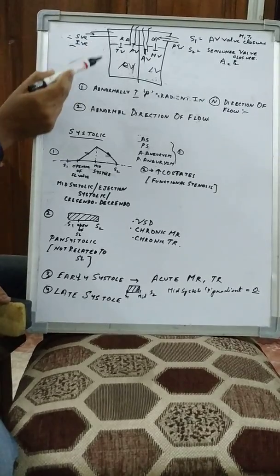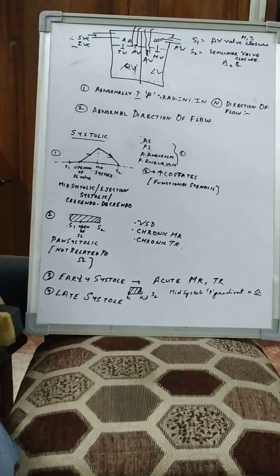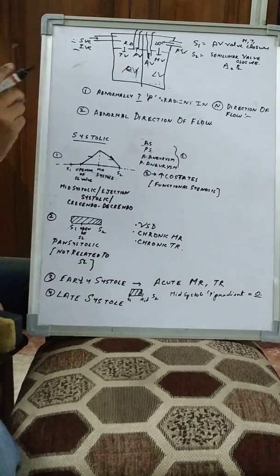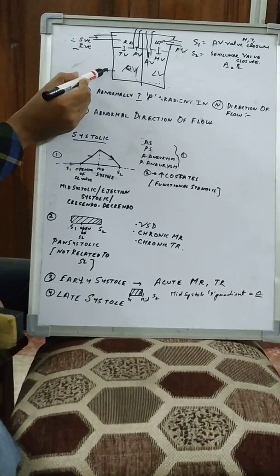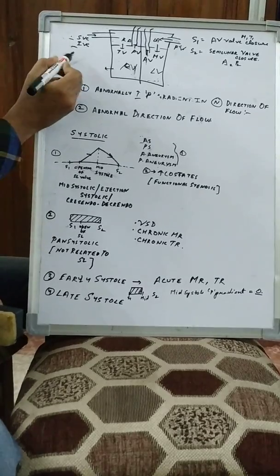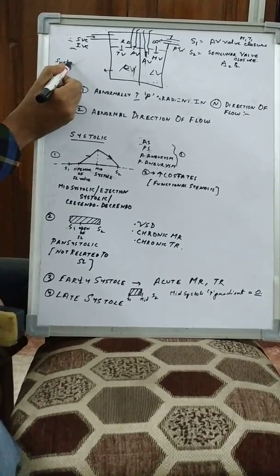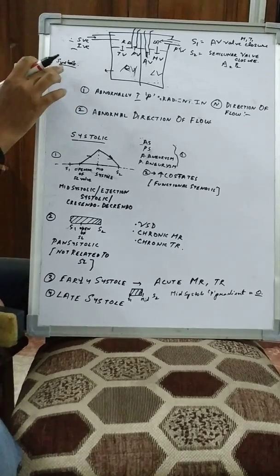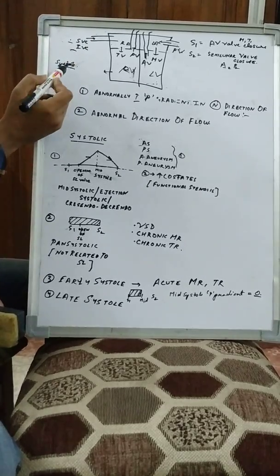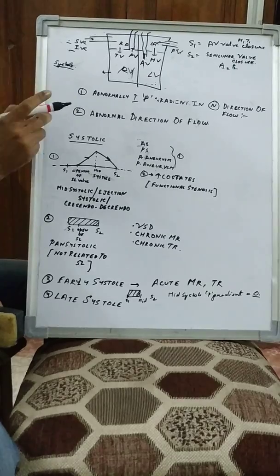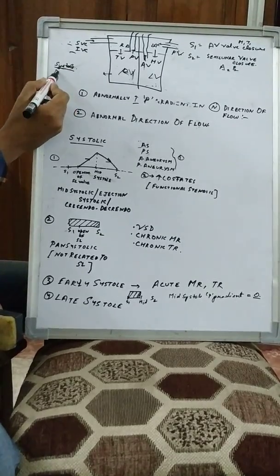Atria relax and contract at a different phase, and ventricles relax and contract at a different phase. Whenever we use the term diastole or systole, we are always referring to the ventricles. That means whenever I say systole, the ventricles are contracting — no matter what the condition of the atrium is. If the ventricles are contracting, it is called systole. If the ventricles are relaxing, it is called diastole.